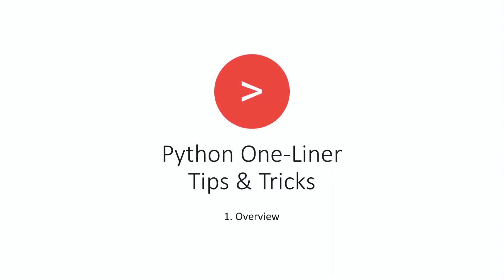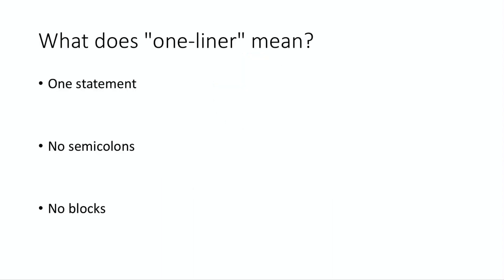First we should define what exactly I mean by one-liner. A one-liner is pretty much what it sounds like. It's a single line of Python code that solves a problem. If you can solve the problem in a single line then it's considered a one-liner.